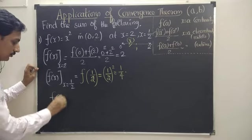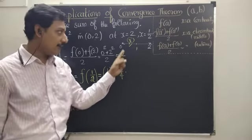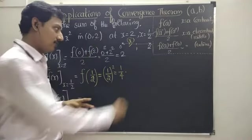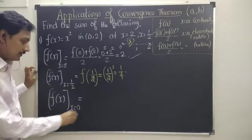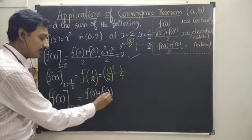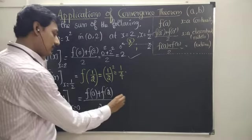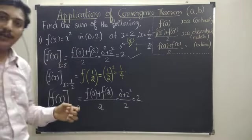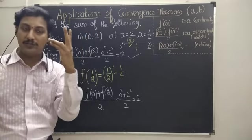What about x equal to 0? x equal to 0 is a point of discontinuity in one of the extreme sides. So the answer is the average of both the extreme values: f(0) plus f(2) by 2, because this is a periodic function. Once again the answer is 0 squared plus 2 squared by 2, which is 2. So once the points are points of discontinuity in the extreme side, we get the same answer for both endpoints.